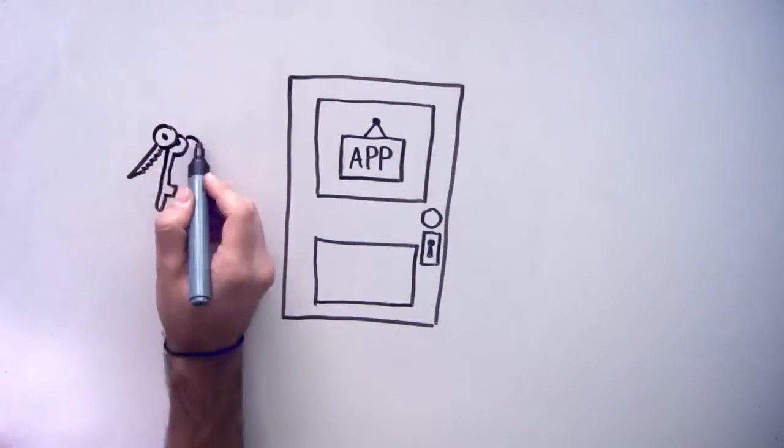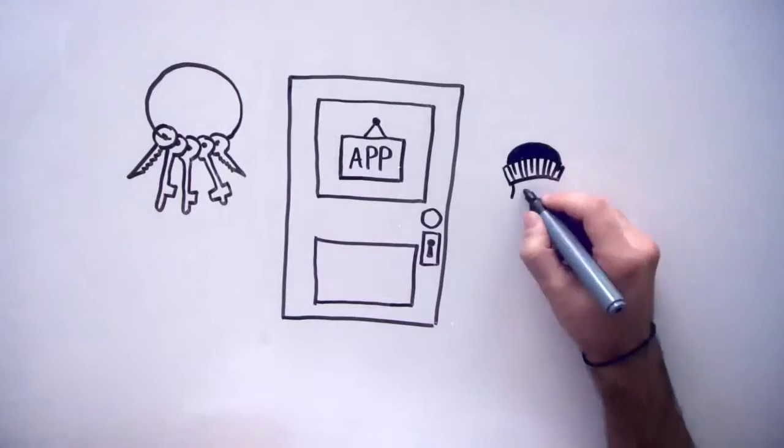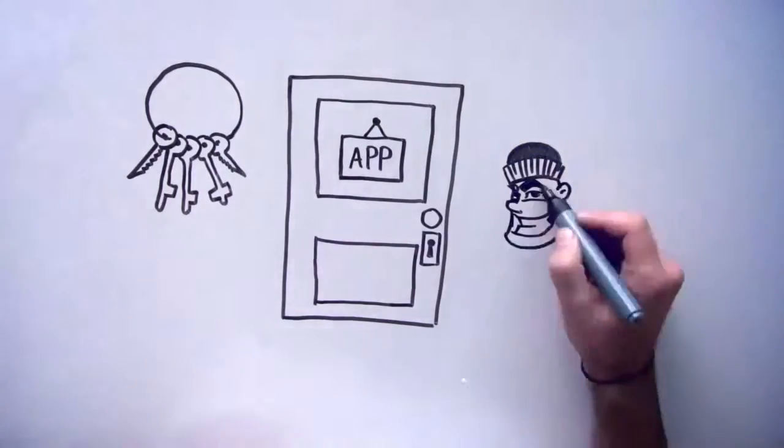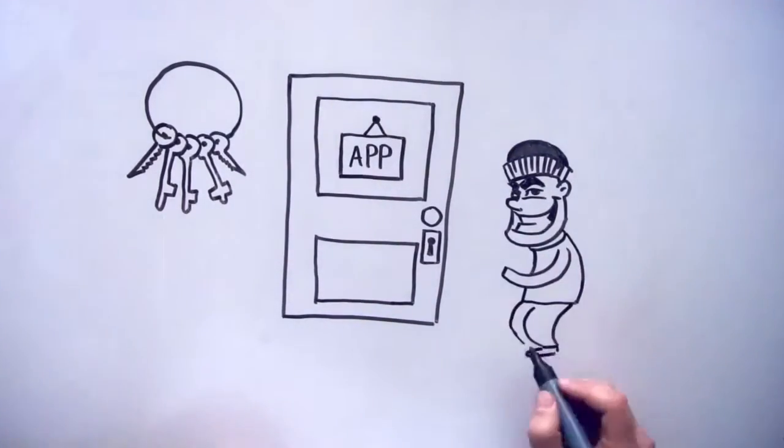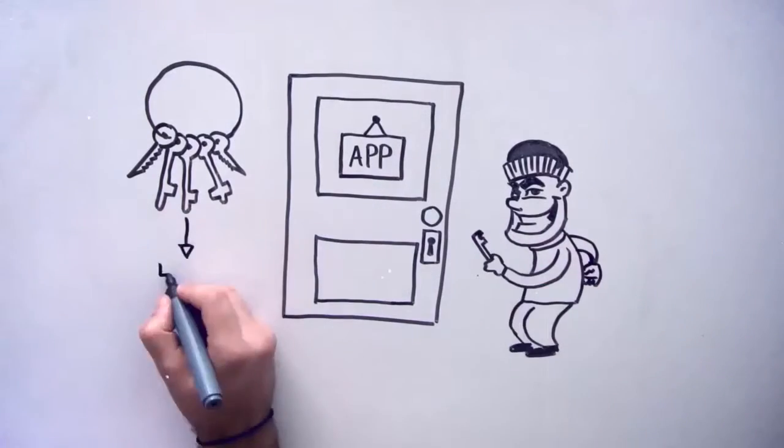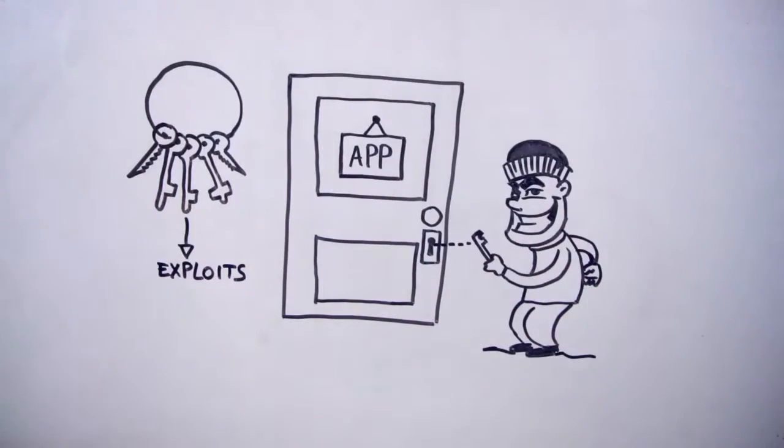If we apply that to real life, it would be like having a lock representing the system or application that has a design flaw that would allow multiple keys or exploits to open it, making it much easier to access what you're trying to protect.